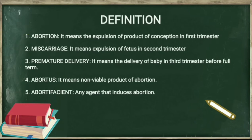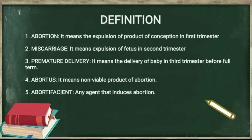Some definitions essential to this topic: Abortion means expulsion of product of conception in the first trimester. Miscarriage means expulsion of fetus in the second trimester. Premature delivery means delivery of the baby in the third trimester. The whole period of pregnancy is divided into three trimesters — first, second, and third — of three months each. Abortus means non-viable product of abortion. Abortifacient means an agent that induces abortion.